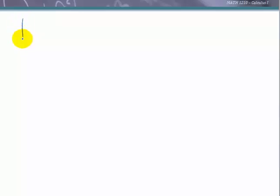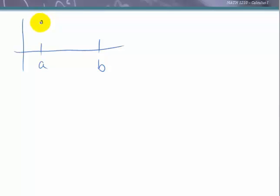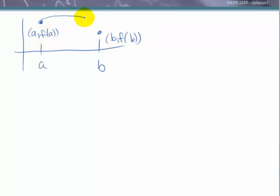Let's go ahead and mark our interval from a to b. We need a continuous differentiable function there, so we'll put some point (a, f(a)) and some point (b, f(b)) with a continuous differentiable function on that interval. Now we want to look at the secant line that joins up those two endpoints of the interval and express that.